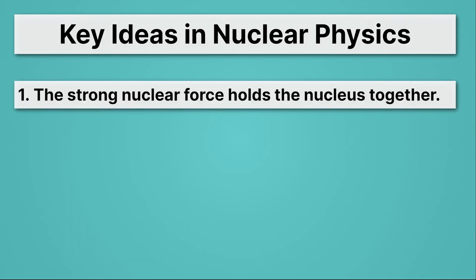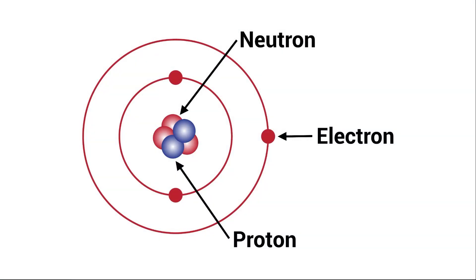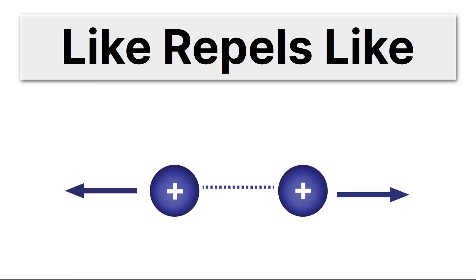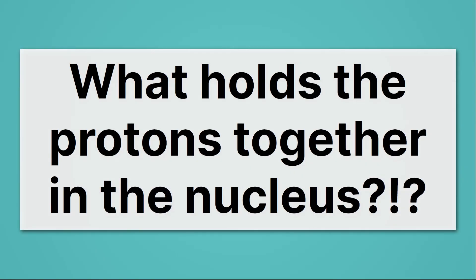First up, the strong nuclear force holds the nucleus together. Let's think about the atom in a little more detail and then jump back to this nuclear force thing. Okay, so here we have our atom. In the center we have protons and neutrons. But recall that protons are positively charged. And remember that like repels like, so we'd really expect those protons in the nucleus to fly apart. What holds the protons together in the nucleus?